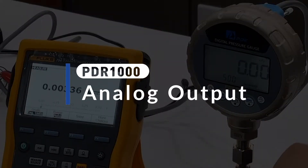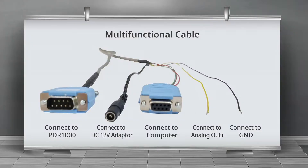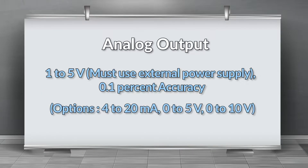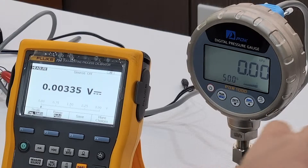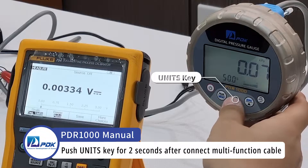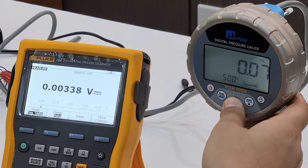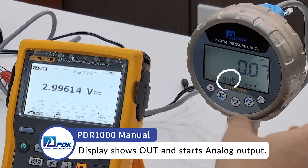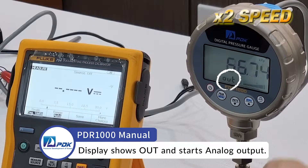Analog output: push the units key for two seconds after connecting the multifunction cable. The display shows 'out' and starts analog output.